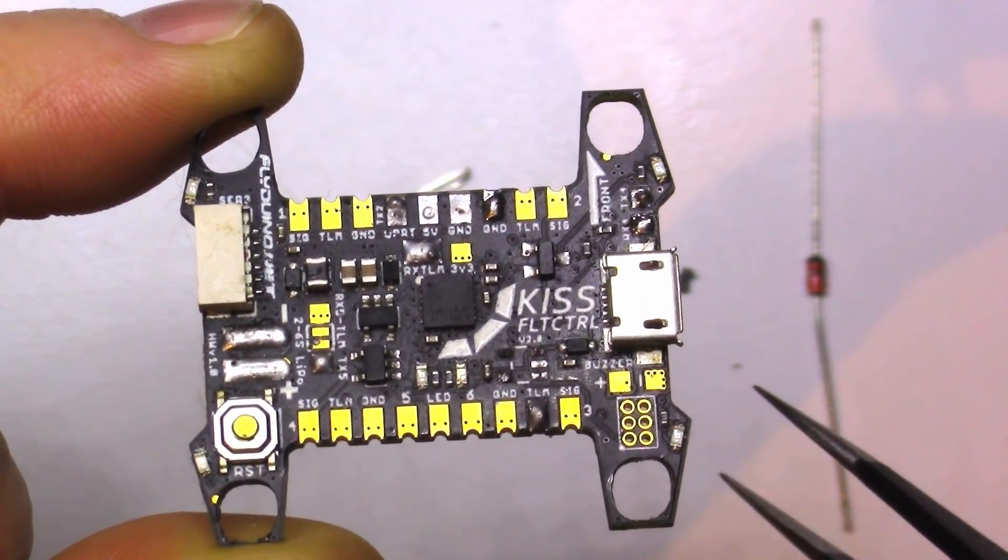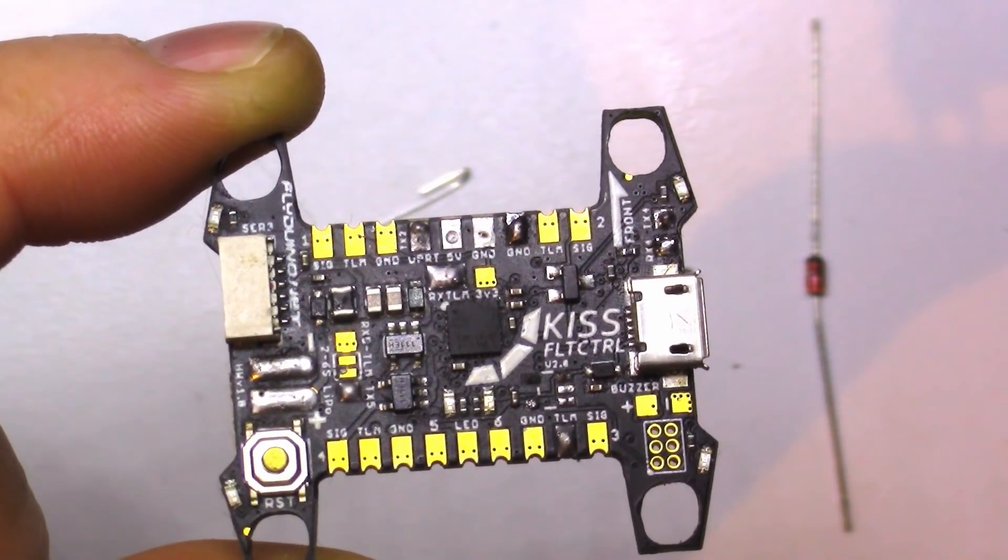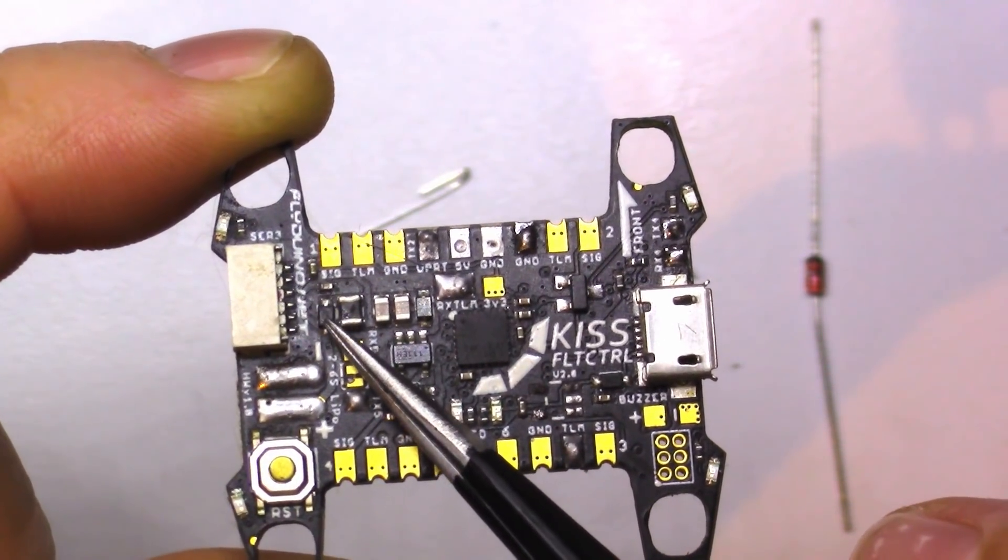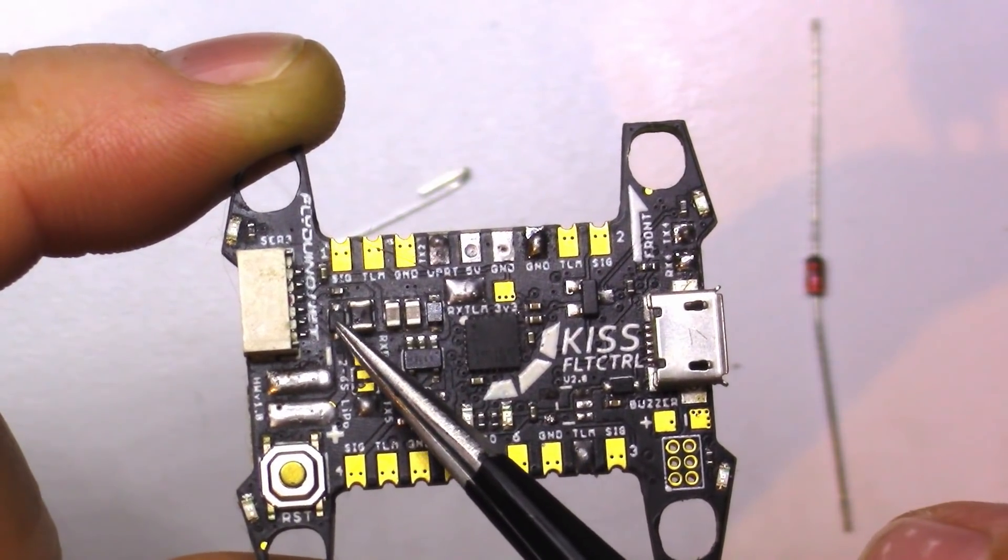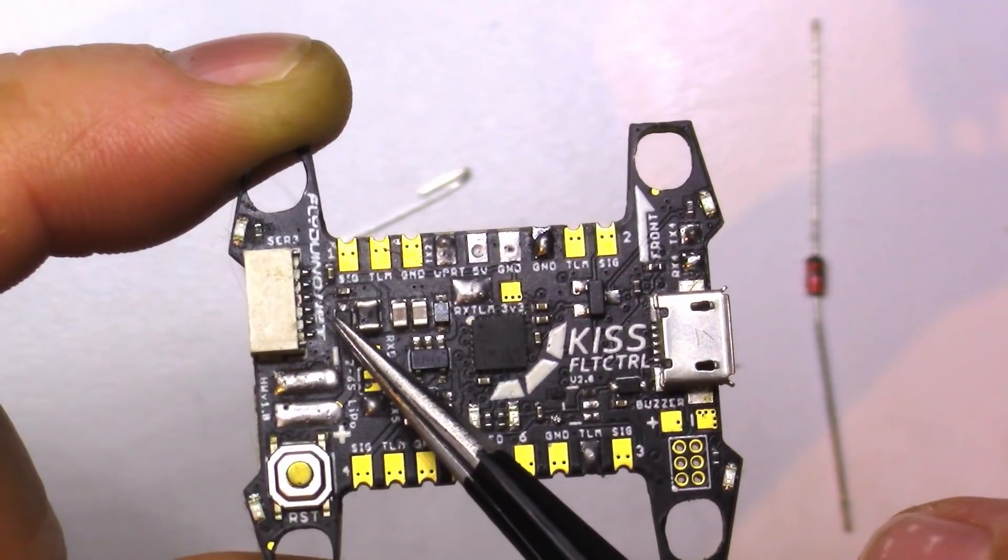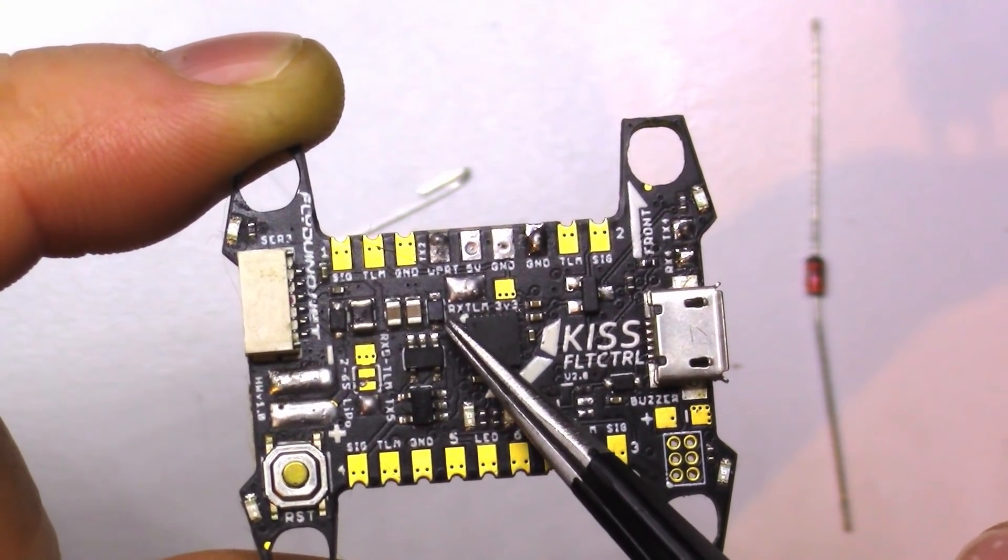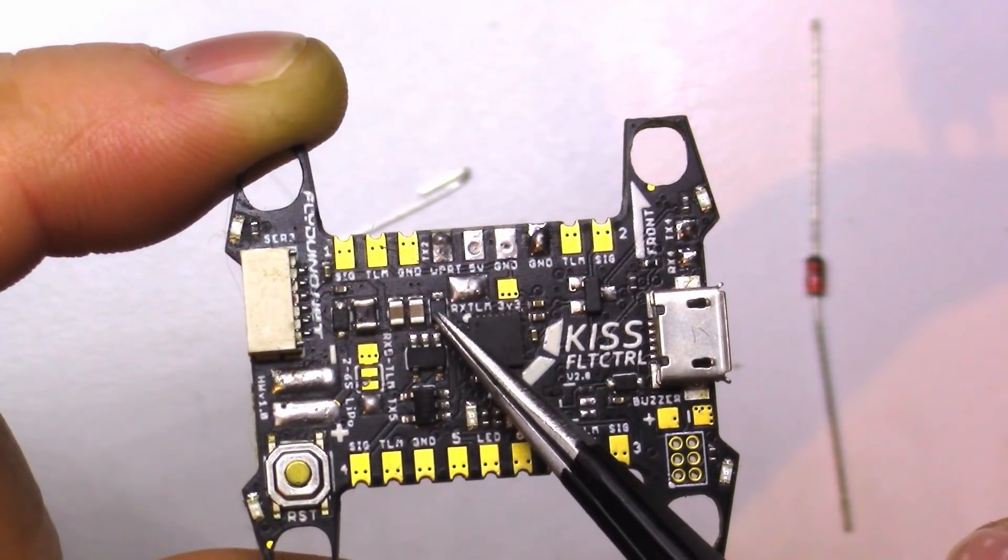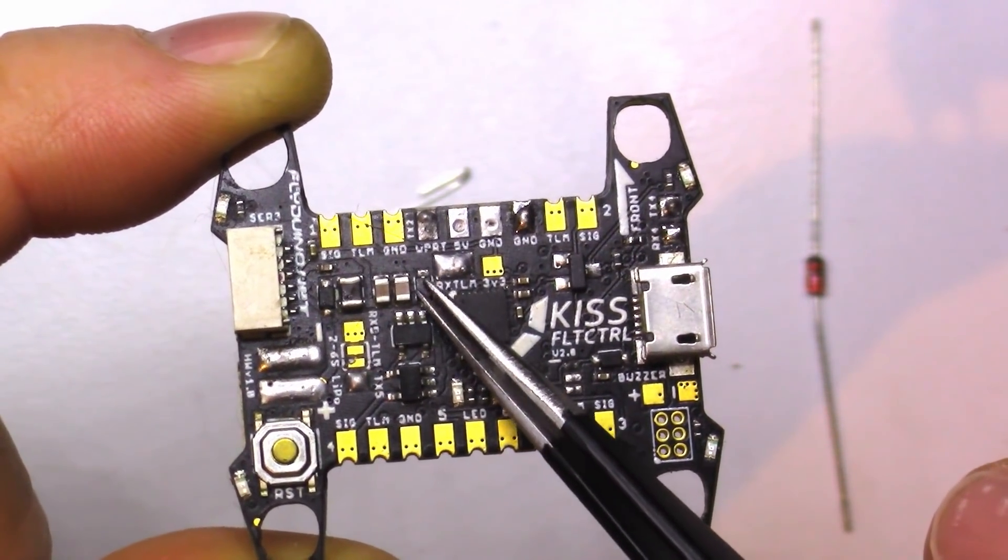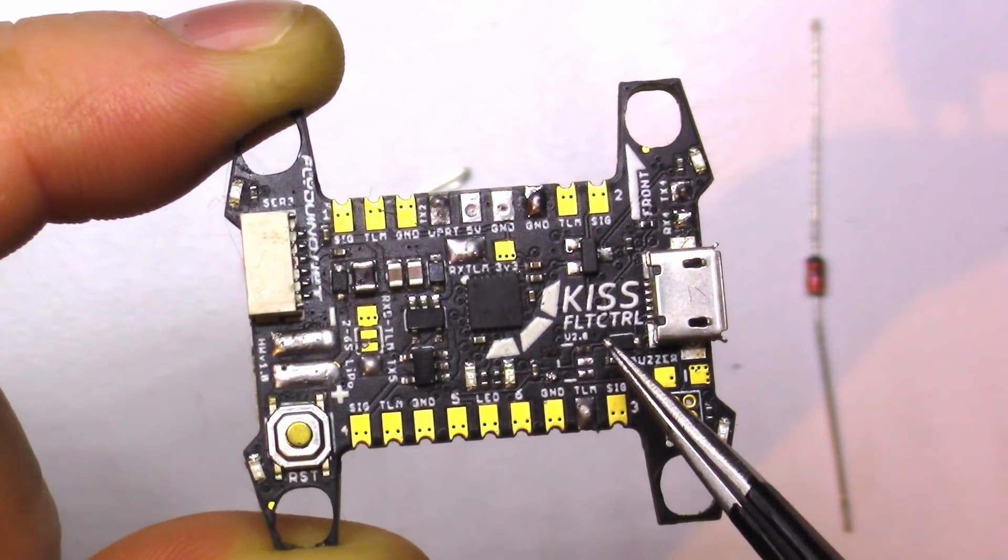We can look here at the Kiss V2 flight controller, and we can see a diode which is used to protect the flight controller from a reverse polarity situation. We can also see here a diode which is used to clamp or limit the voltage if spikes are present in the system. And we can also see here a diode which is separating the 5 volts coming from the USB.